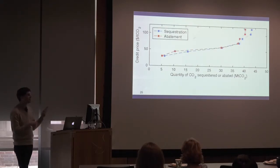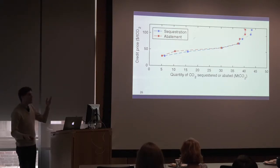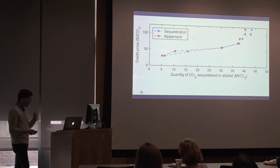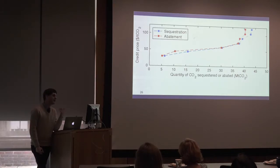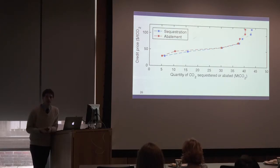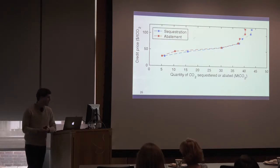We can also think about this at the system level, calculating the total available abatement from biorefineries for credit prices from $30 to $75. You can do this on a life cycle basis, considering the electricity used for compression of CO2 — that emits some residual amount of emissions. We find that abatement and sequestration are relatively similar; you abate a little bit less because you emit some CO2 when you run your compressors, but whether you're considering this on a life cycle basis or not, there's a relatively similar opportunity.